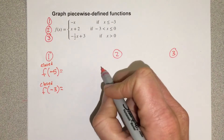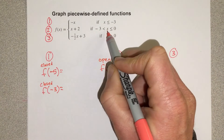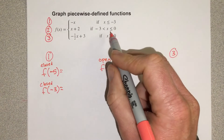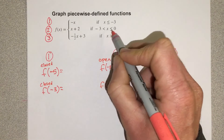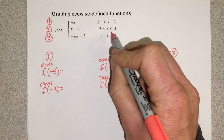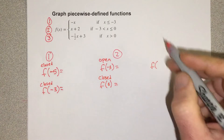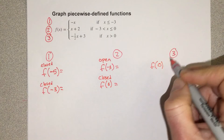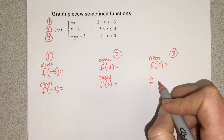Coming to the middle function, I'm going to plug negative three into that one as well, but this one will be open because negative three is not greater than negative three — it's not between negative three and zero. So I'll write that as open. Then I'll plug in zero, which would actually be a closed dot because that's the endpoint of the domain for the middle function and it's equal to zero.